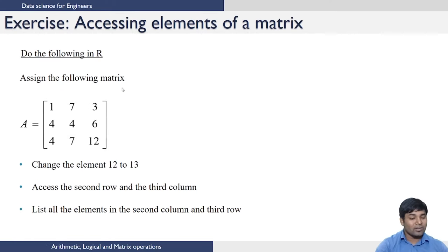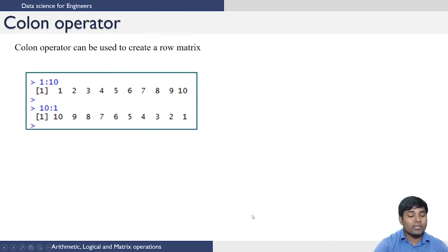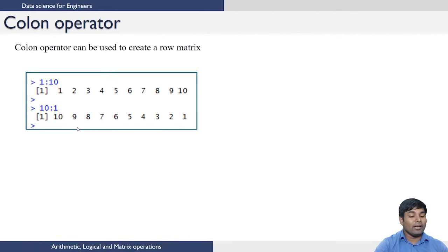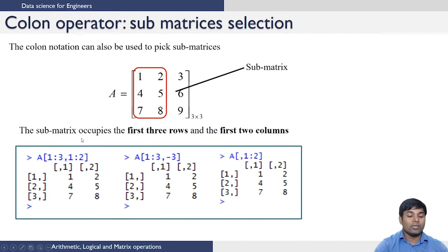As an exercise to access elements of a matrix, you can try solving the problems given. Now we will introduce what is called the colon operator. The colon operator is used to create an array of elements with equal width. For example, typing 1:10 will create numbers from 1 to 10 with a gap of 1. You can also reverse the order and it will print from 10 to 1. The colon operator is important because it can be used while accessing the number of rows or columns, as seen in the previous slides.